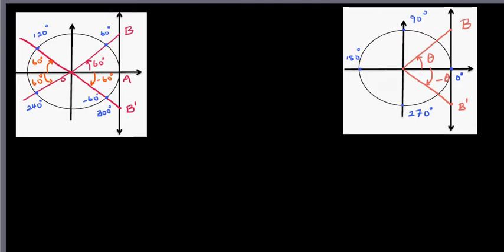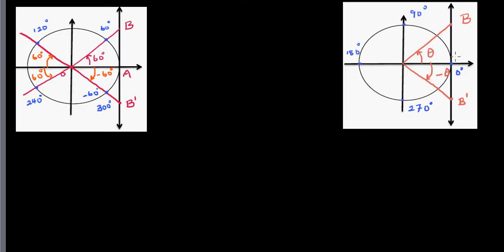In my previous video I explained how tan θ is the length of line segment AB in a unit circle. This line AB is called 'tan' because it is tangent at that point — it's always the length of AB.